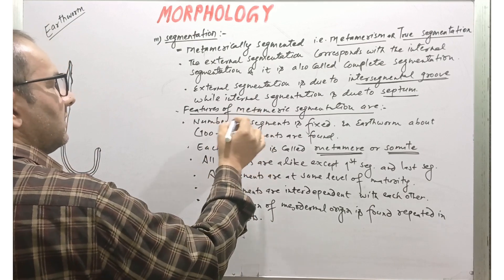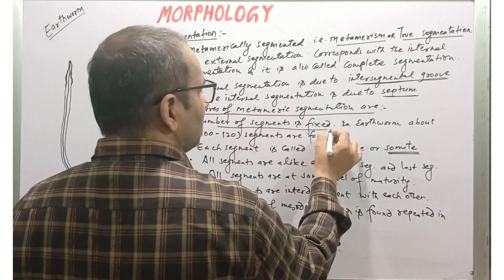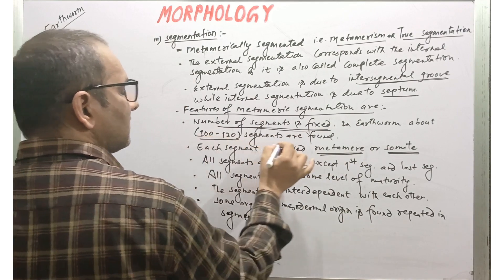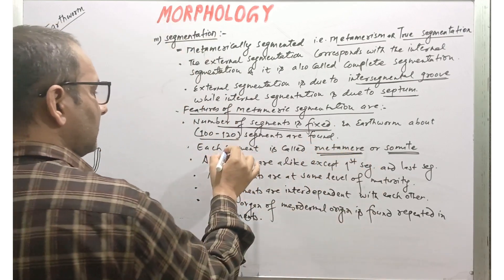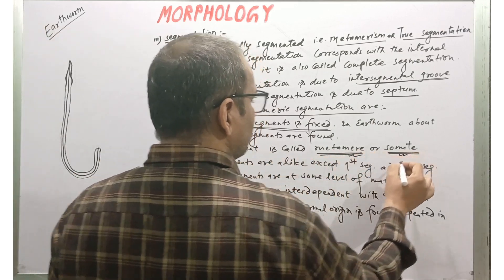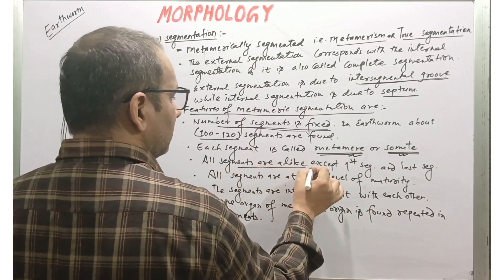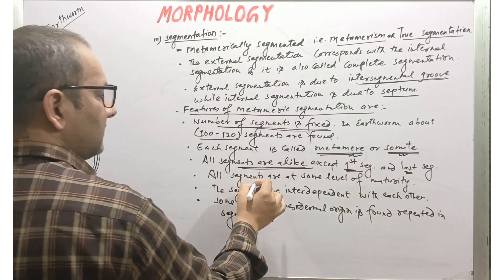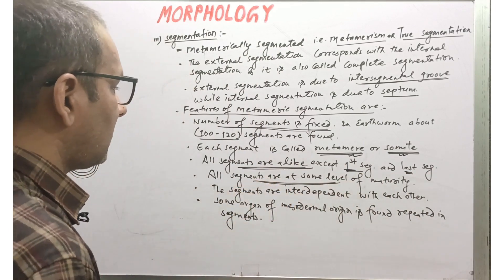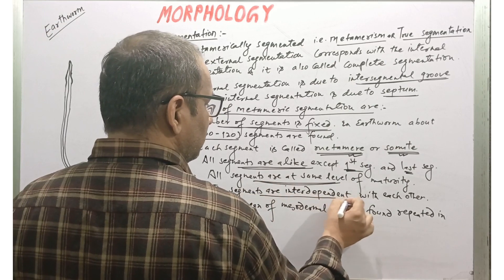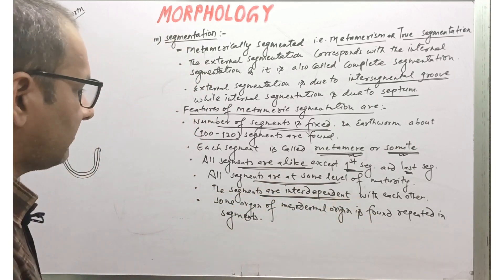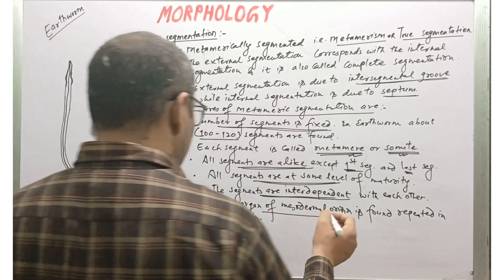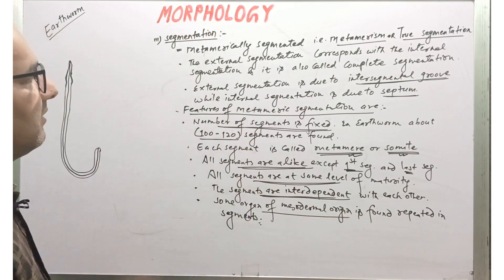The most important points to remember are: the number of segments remains constant — about 100 to 120 segments throughout the lifetime. Each segment is called a metamer or somite. All segments are alike except the first and last segments. The maturity level of all segments is the same, segments are interdependent, and organs of mesodermal origin like muscles are found repeated in all segments.